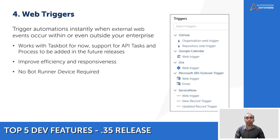Taking an example: email web triggers eliminate the need for setting up a botrunner to constantly open Outlook every 15 minutes and check for new emails. Instead, the system can trigger actions automatically as soon as the email arrives, making the process much more efficient.